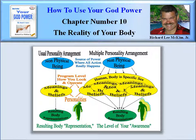Now, if you change the set — the group — of meanings and beliefs, then immediately you have a different resulting body representation. Because it is the meanings and beliefs that dictate how that body is represented. Does it have diseases? Does it have good eyesight or bad eyesight? Is it allergic to this or that? Good at this or that? Whatever that set of meanings and beliefs are, that's how the body represents itself.